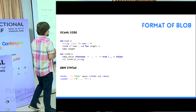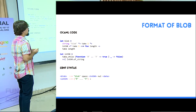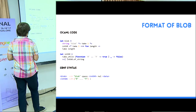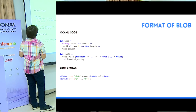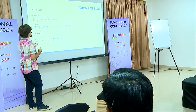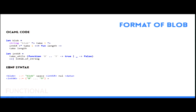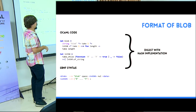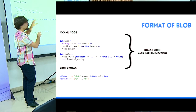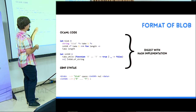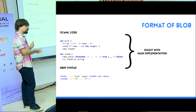Firstly, we have the blob. The blob is like your file in your file system, and each blob contains entirely your file. At the beginning we have a Git header — the kind of the Git object, so it's a blob — and after we have the length of the Git object. We can see the OCaml code from the Angstrom library to describe how to decode something, and we have the EBNF syntax below. From this, we serialize the blob: we take the header and take entirely your file, and put all of it into the hash implementation, which gives you a unique identifier.